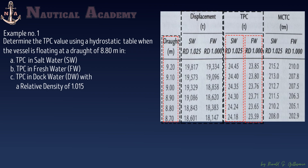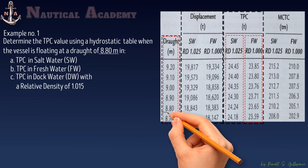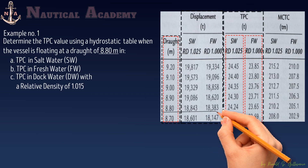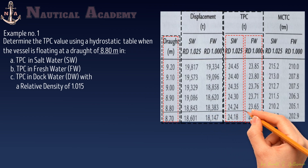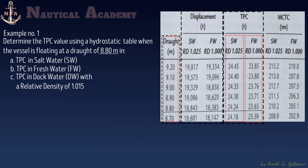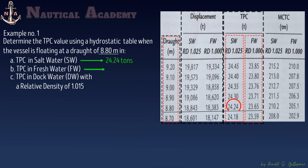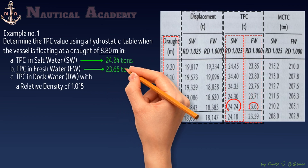To find the ship's TPC, first we determine the ship's mean draft, which in this problem is 8.80 meters. We go to the first column of the hydrostatic table and find that draft. Along that row, in the fourth and fifth columns, we find the TPC in salt water and fresh water respectively. So the answer to part A is 24.24 tons, and the answer to part B is 23.65 tons.